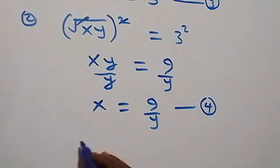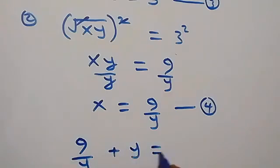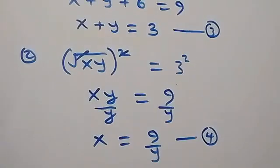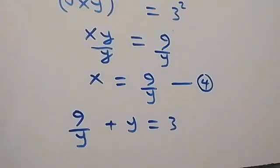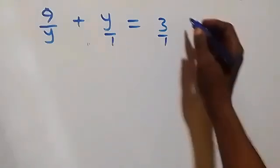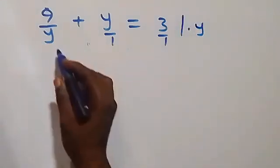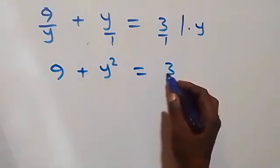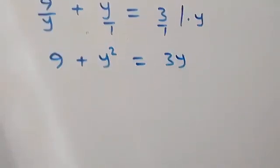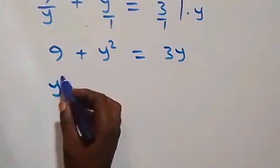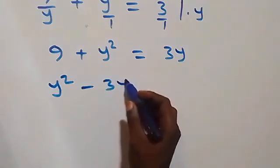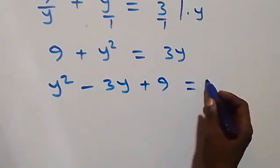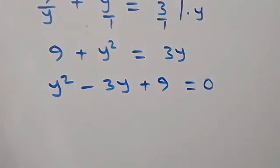Equation three becomes 9/y + y = 3. Multiplying through by y to clear the fraction gives 9 + y² = 3y. Rearranging, we get y² − 3y + 9 = 0, which is a quadratic equation.